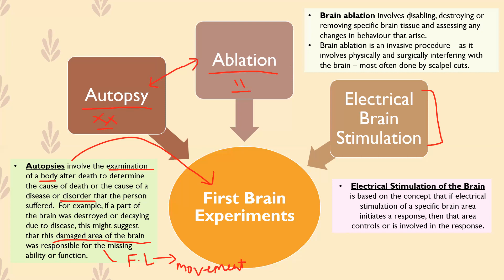That might sound gruesome and unethical — and it is. Today we don't carry out brain ablation. But we have to remember these are the first brain experiments, before any ethical principles came into play. Surgeons were selecting certain people, disabling or destroying certain parts of their brain, and observing the changes. For example: destroy the occipital lobe — what changes in behavior arise? Damage one section, then another, and see what happens. It's a deliberate destruction of brain regions to see the consequences.